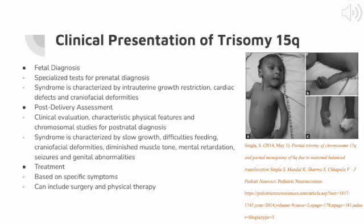Regarding clinical presentation: specialized tests like ultrasounds and amniocentesis can determine a fetal diagnosis of trisomy 15. An ultrasound uses sound waves to capture images inside the body, while amniocentesis involves extracting and studying a sample of amniotic fluid. Trisomy 15 is characterized by intrauterine growth restriction, cardiac defects, and craniofacial deformities. These craniofacial deformities are caused when joints in the bones of the skull close and cause the head to look long, narrow, or abnormally small with a bulging at the back. Some fetuses can also have clenched hands and club feet.